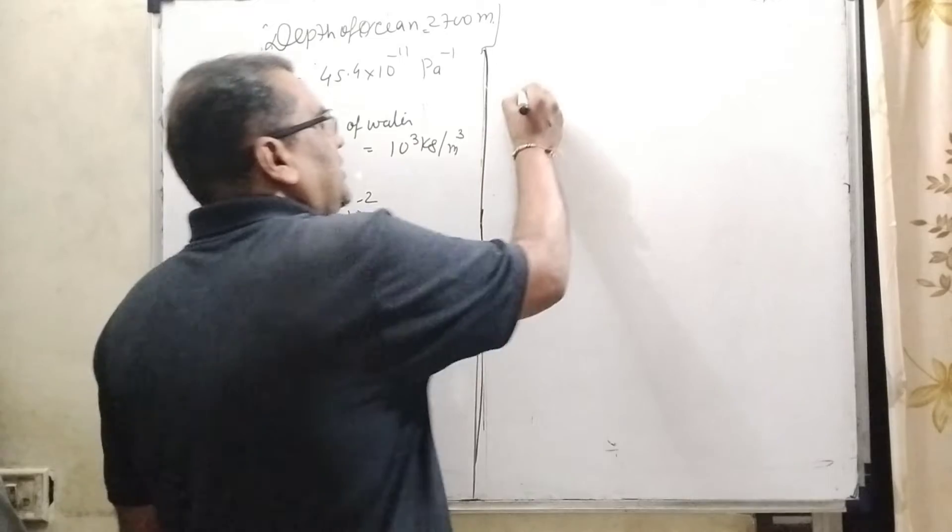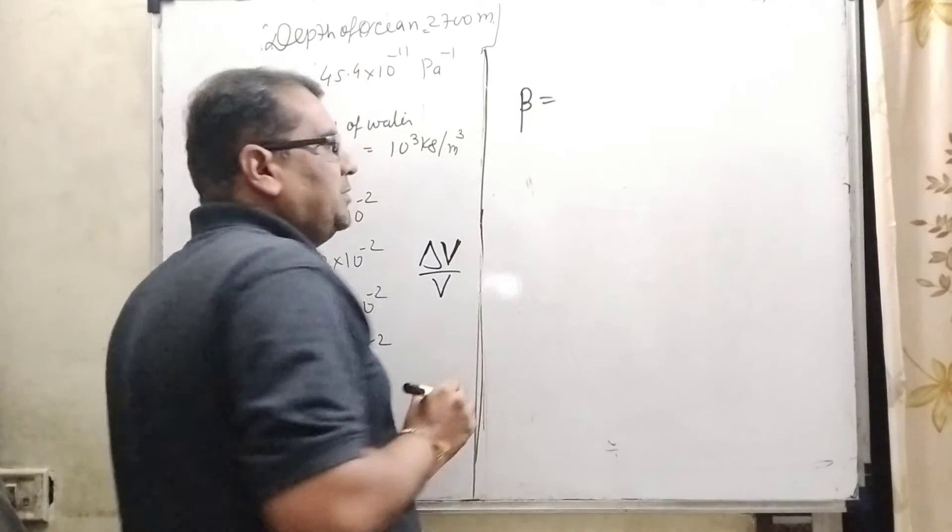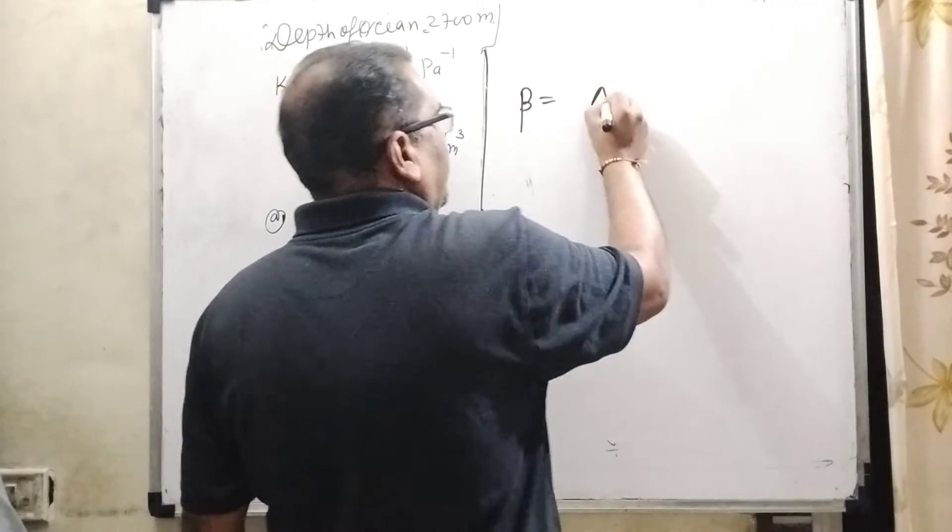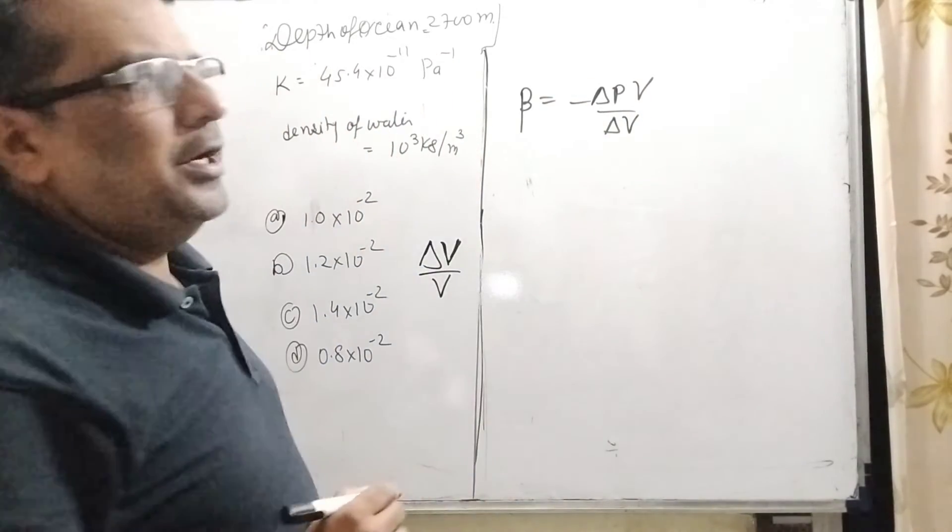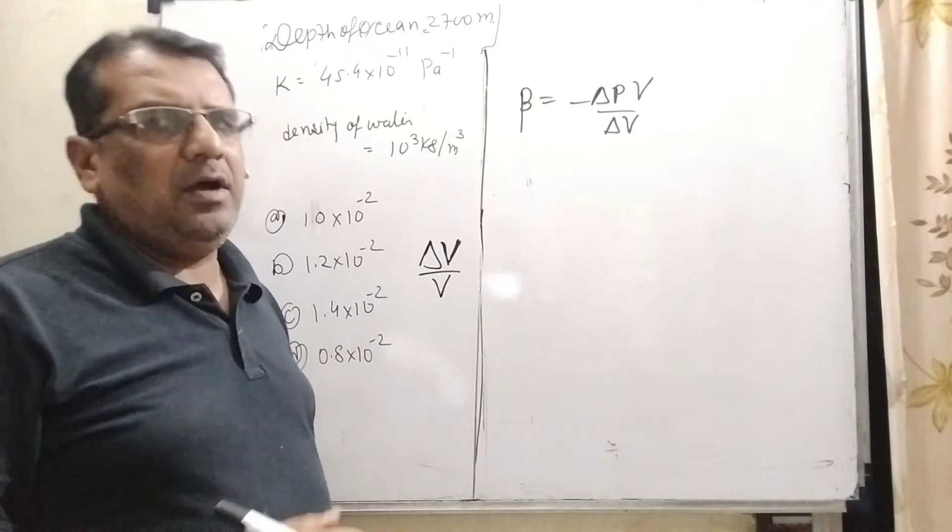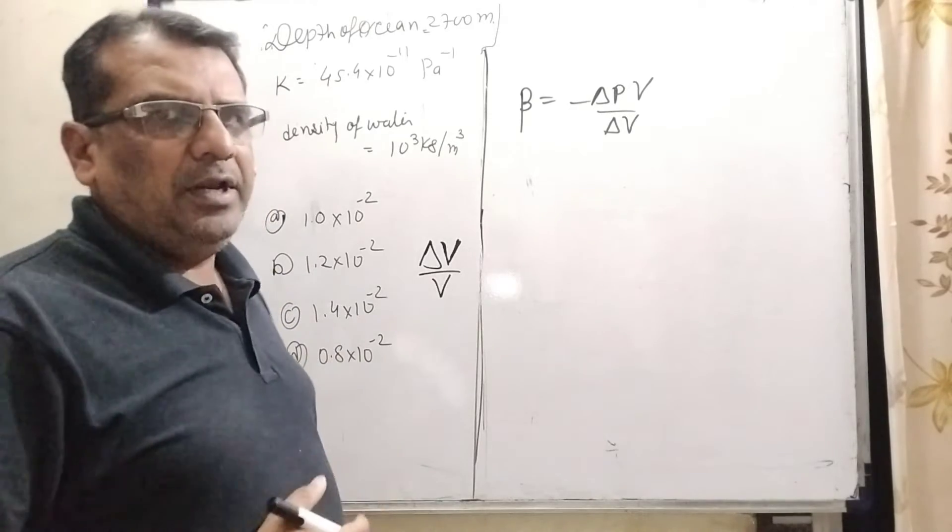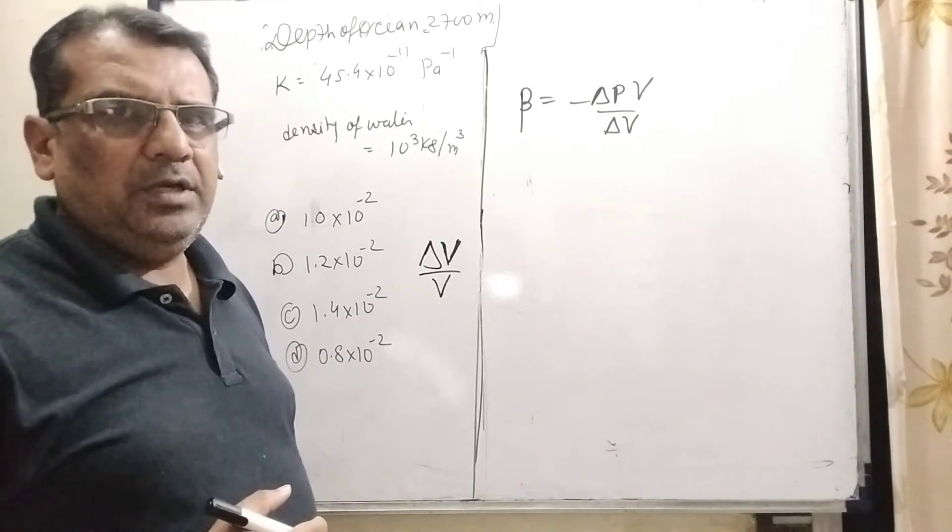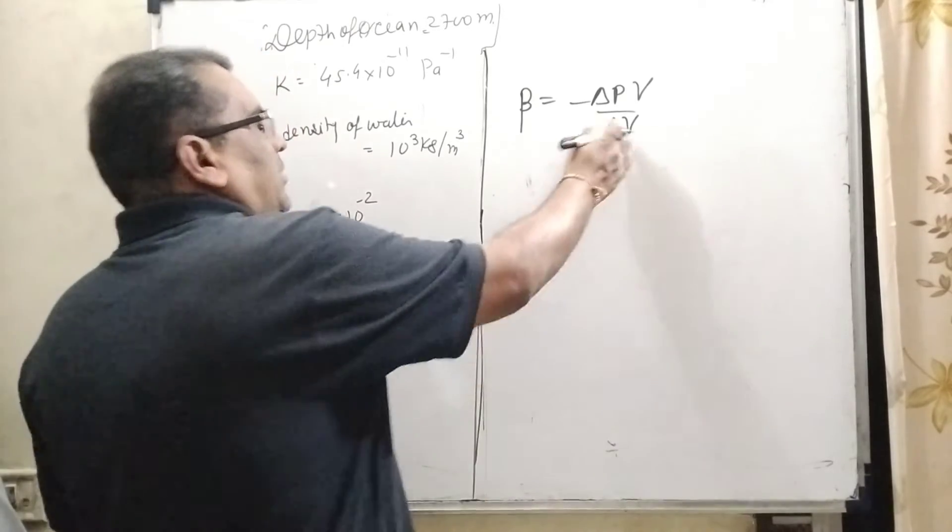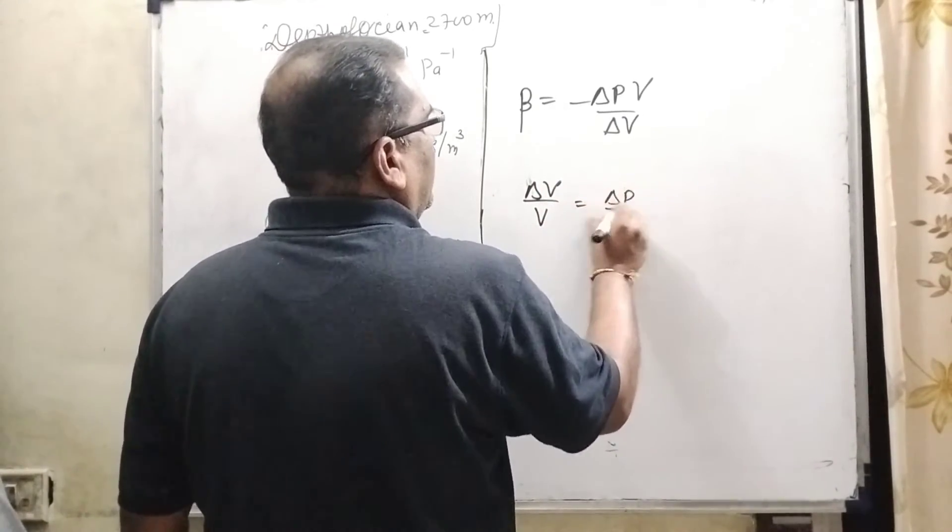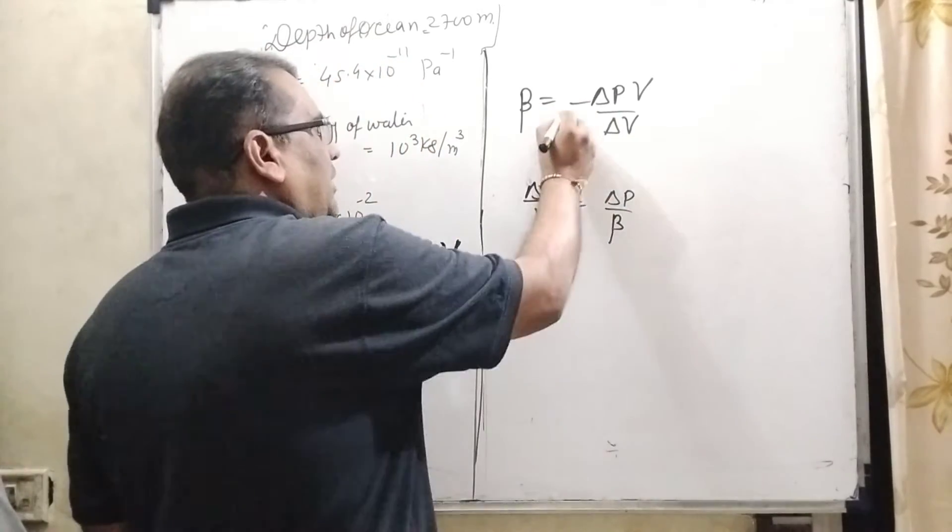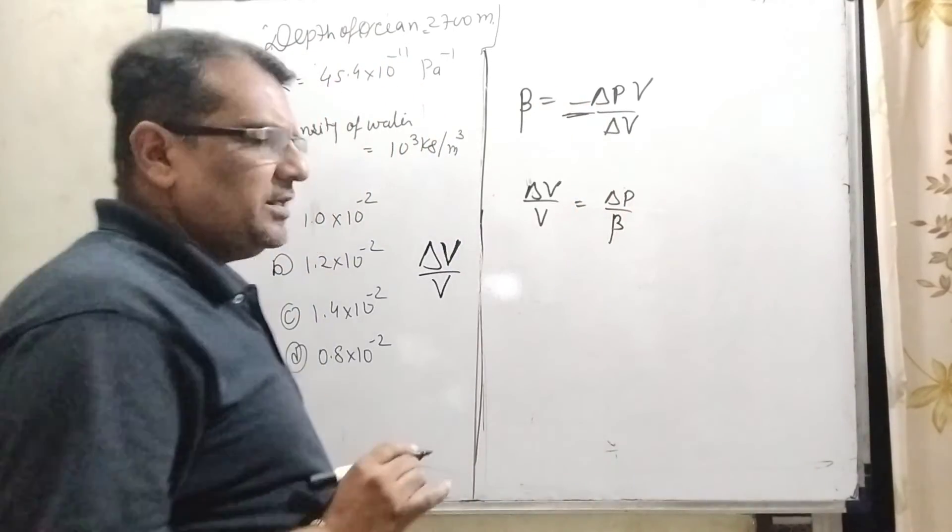Here as we know that bulk modulus β equals ΔP × V upon ΔV with a negative sign. Why we have taken negative? Negative sign shows the decrease of the volume. Okay, later we have neglected the negative sign. Clear.